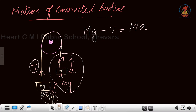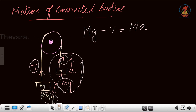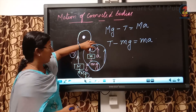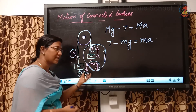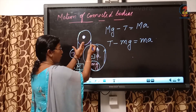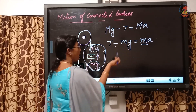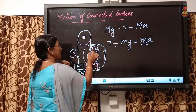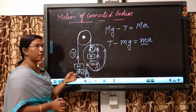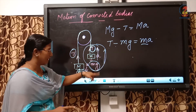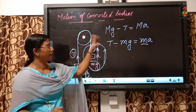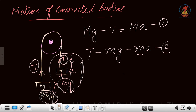For the smaller mass, the object is moving up with acceleration, meaning the effect of tension T produced in the string is more than the effect of weight mg. So we write T minus mg equals mA. Why? Because the tension force is greater than the weight acting downwards — that is why the smaller mass and the rope are moving upward. This is equation 1 (Mg minus T = MA) and equation 2 (T minus mg = mA).